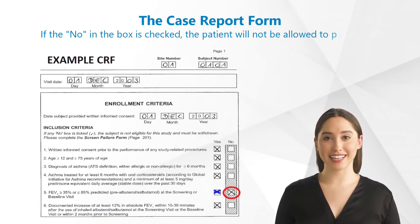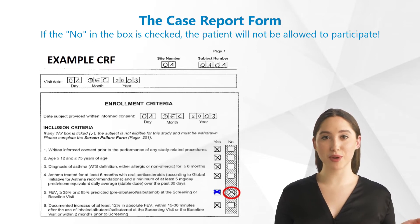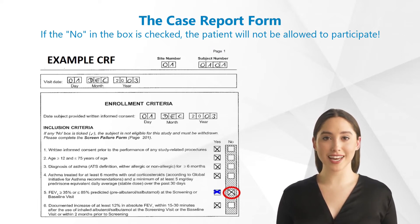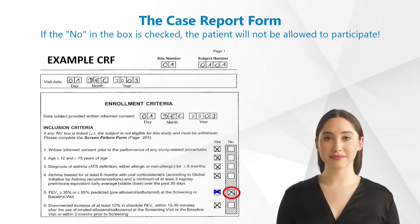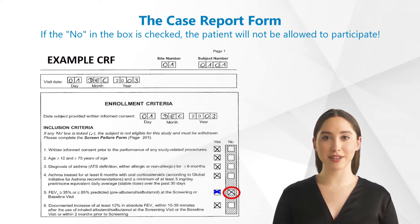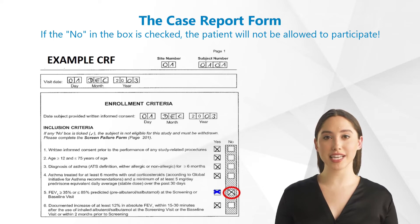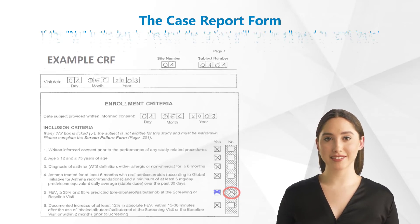Here you see an example of the way the compliance with inclusion and exclusion criteria is documented in the CRF. Under the heading enrollment criteria, those conditions are listed which are absolutely necessary for inclusion in the study. To check the box 'no' here is a wrong entry — if it is checked, the patient will in no case be allowed to participate in the study.